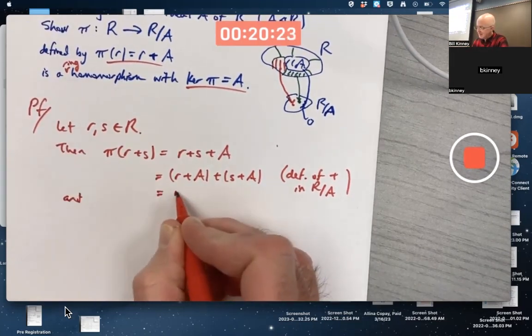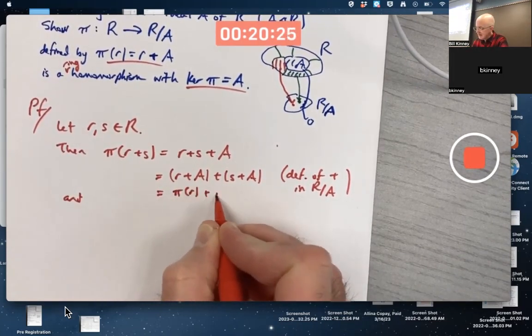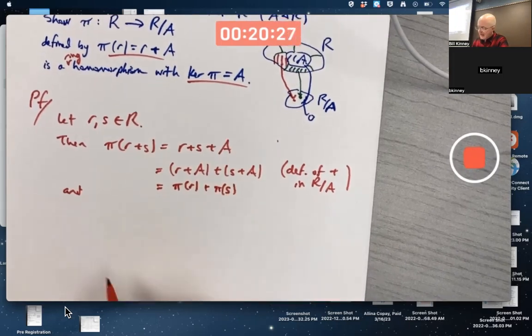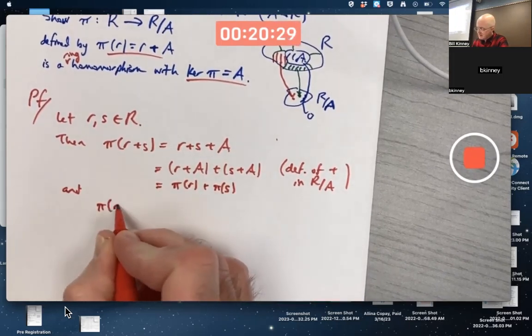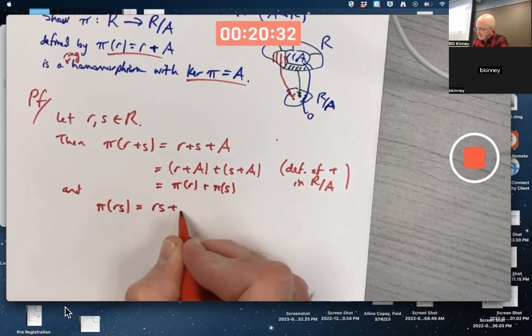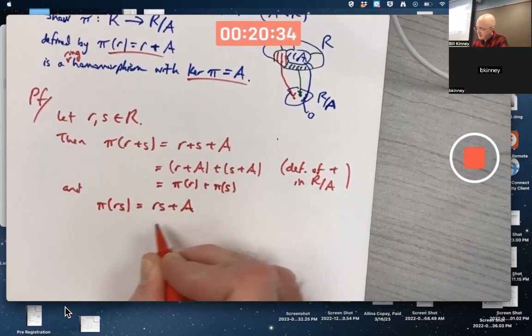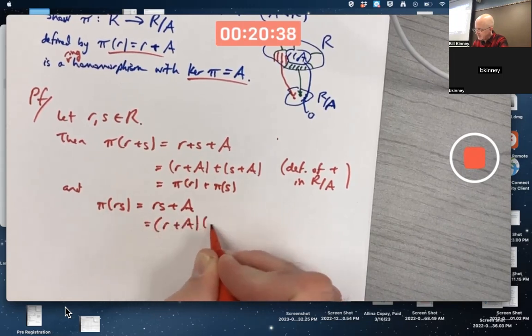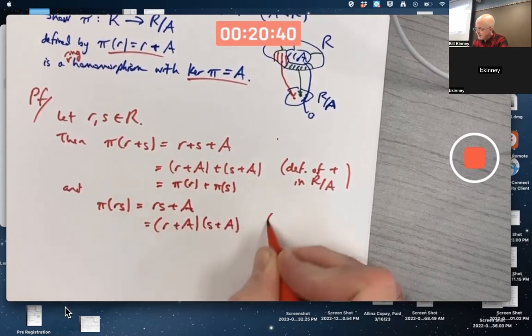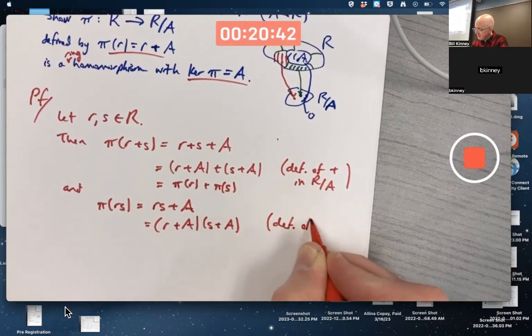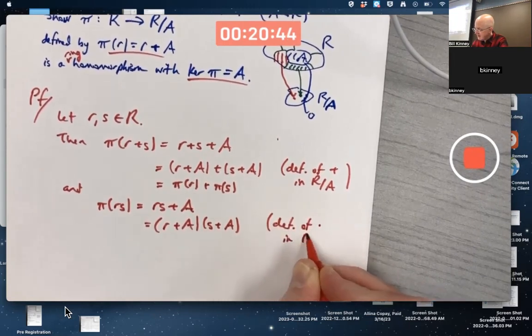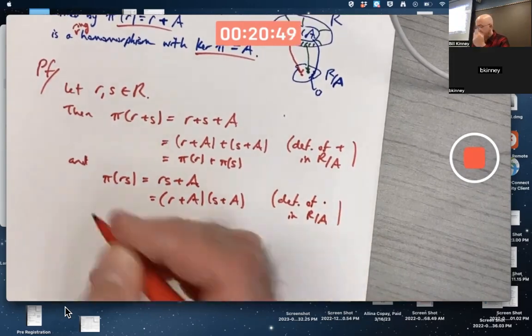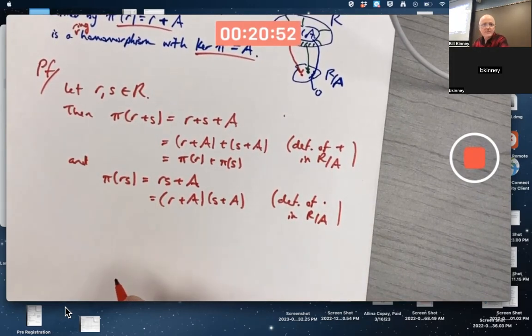And that's pi of R plus pi of S. And under multiplication, what does it mean to multiply two left cosets? You multiply the representatives. We got the answer there. Here's the original multiplication. That's the definition of multiplication in the factor ring. So that verifies that it's a homomorphism, a ring homomorphism.